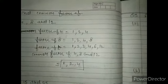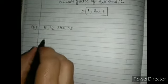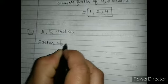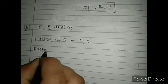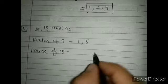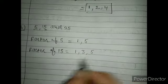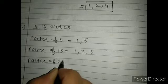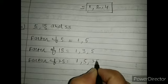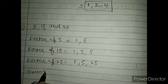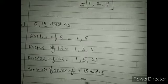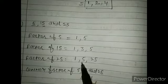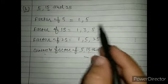Part b: find the common factors of 5, 15, and 25. Factors of 5 are 1 and 5. Factors of 15 are 1, 3, and 5. Factors of 25 are 1, 5, and 25. 1 is common and 5 is common in all three. So 1 and 5 are the common factors of 5, 15, and 25. Always check every number carefully or your answer will be wrong.